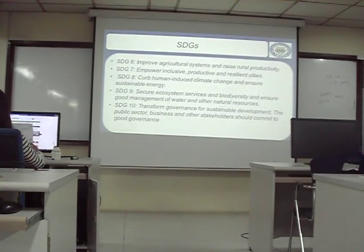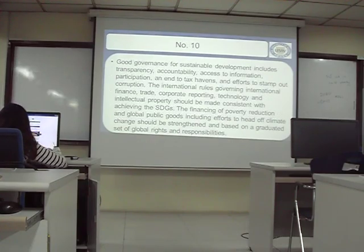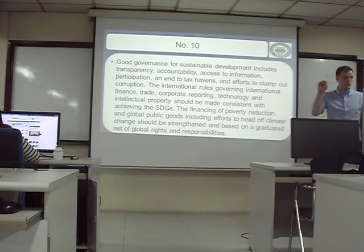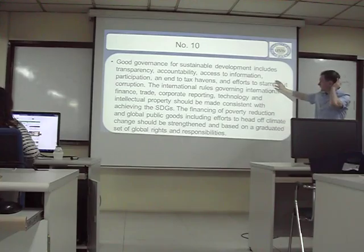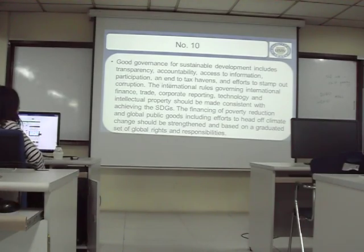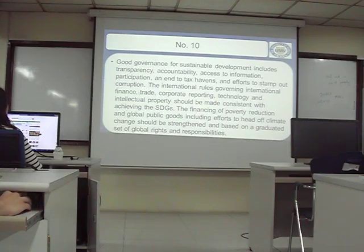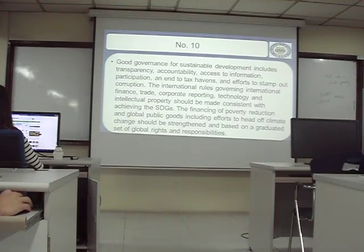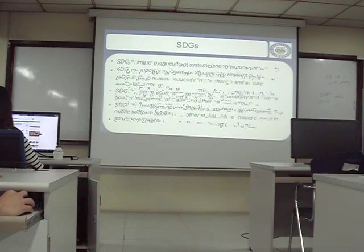Companies should also be aware of these goals — this is what the world is working on together right now. Number ten, governance, is very important. Jeffrey Sachs, who made this course, was an important person in making these SDGs together with governments. He says good governance includes transparency, accountability, access to information, participation, communication, ending tax havens, and efforts to stop corruption. We need to improve rules on finance, trade, corporate reporting, technology, and IP. To do goals one through nine, we need good governance — it is a key point.